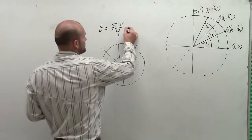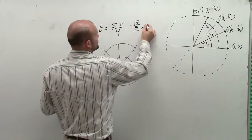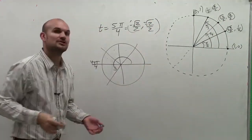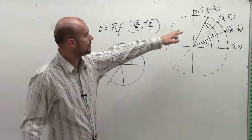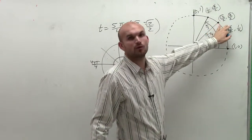Therefore, the coordinate point that corresponds to 5π/4 is just going to be negative √2/2, negative √2/2. So it's just going to be a reflection about the origin of your positive quadrant.